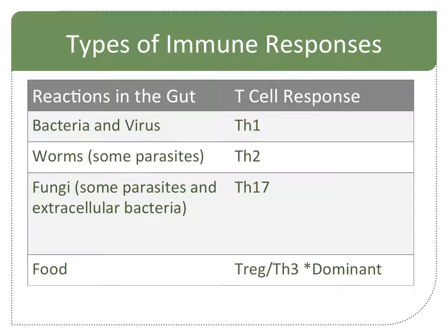You can have any type of immune response in your gut that you would have in the rest of the body. So if you have a bacteria or a virus in your gut, you will have a Th1 response. If you have worms — which I get pretty much every summer when I'm in Tanzania — you will have a Th2 reaction in your gut.